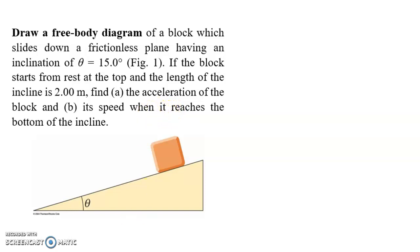A free body diagram is a diagram that shows all of the forces acting on an object. In this case, we have the block and it will have weight in the downward direction, W equals mg. Because the block is rested on the surface, it will also have another force which is going to be the normal.